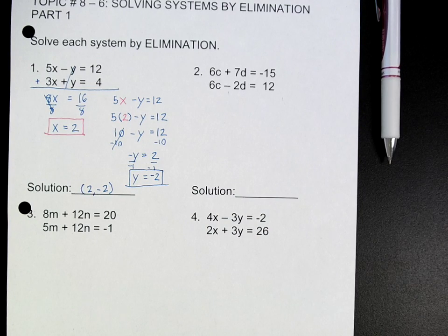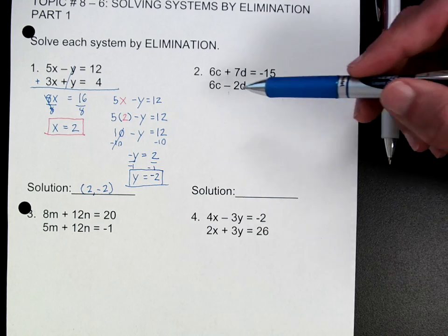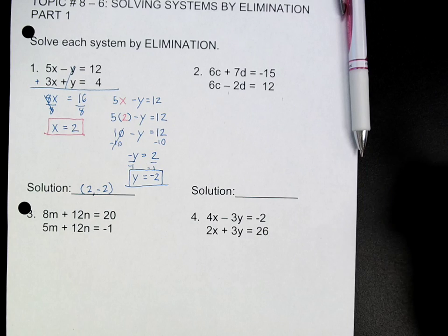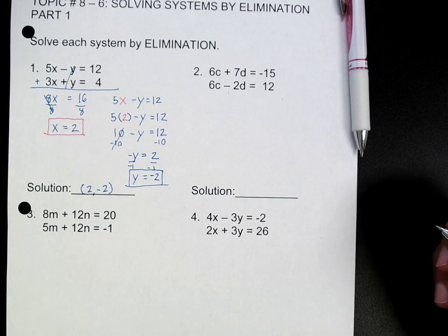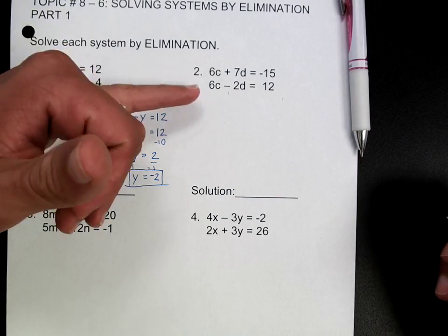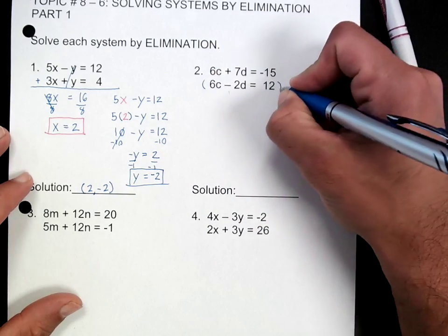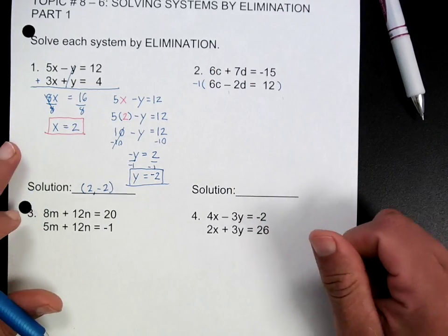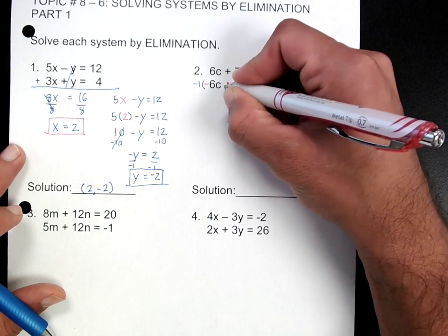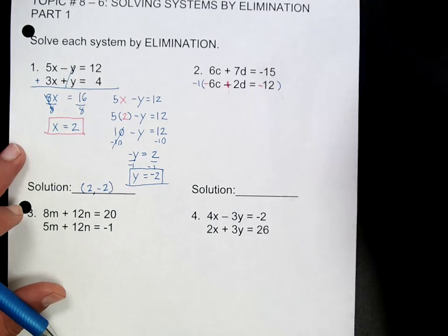Now the one that's a little bit different would be a problem like number 2. Notice what happens if you add - is one of those variables going to cancel? Is one going to cancel if I add them like they are? No, they're not because both of them are positive. You would think this would cancel, but if you add 6c plus 6c, that's 12c. It's not going to cancel. So what you need to do is multiply either the top or the bottom by negative 1.